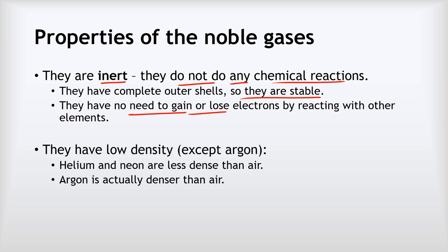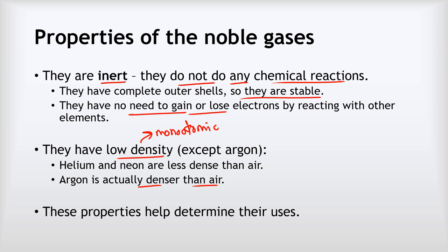Another important property is that they have low density. The reason they've got low density is because they are monoatomic — they're made out of very very small particles. Argon is a bit more dense, but helium and neon are both much less dense than air, while argon is slightly denser than air. These properties help determine the uses of the noble gases.